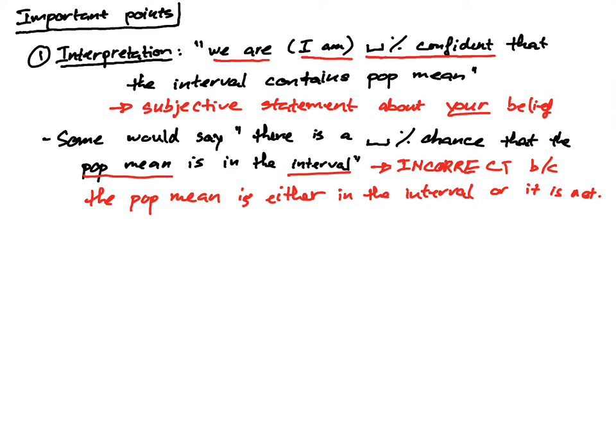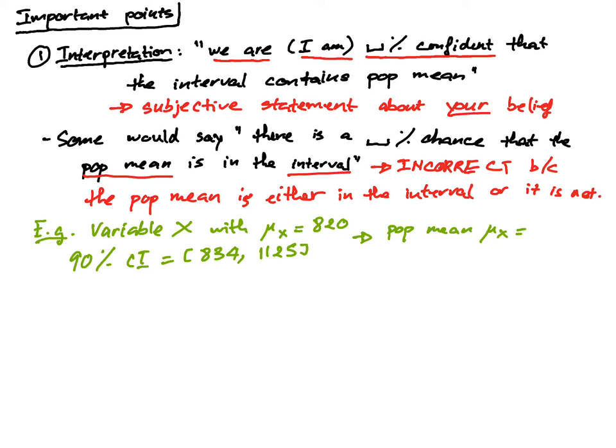Let's look at an example to hopefully see this point a little clearer. Suppose I have a variable x with a population mean of 820. And then my 90% confidence interval is the interval from 834 to 1125. So given this population mean and this interval, the population mean mu x of 820 is not in the interval.